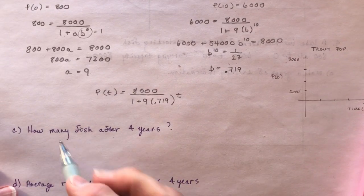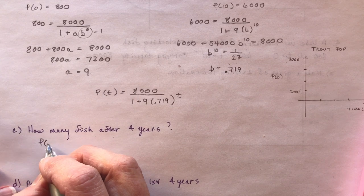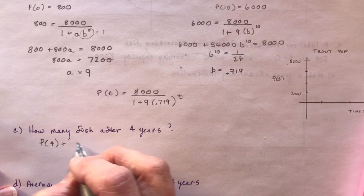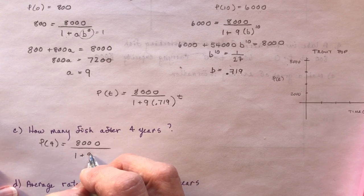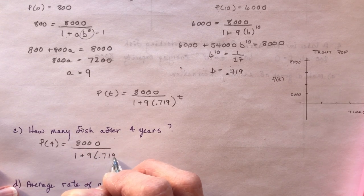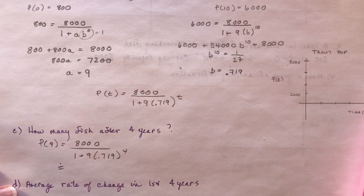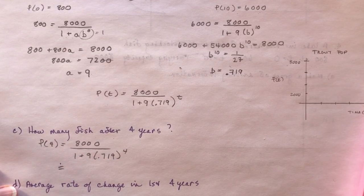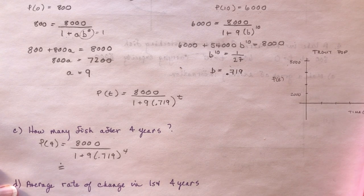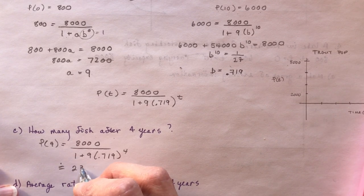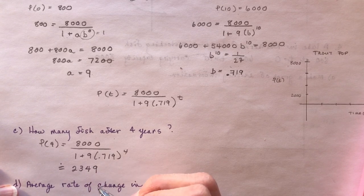So how many fish after four years? So that's the population at year four. So I have 8,000 divided by 1 plus 9 times 0.719 to the power of four. And if you do that on your calculator, you should get 2,349. That's a lot of little fishies in the water.